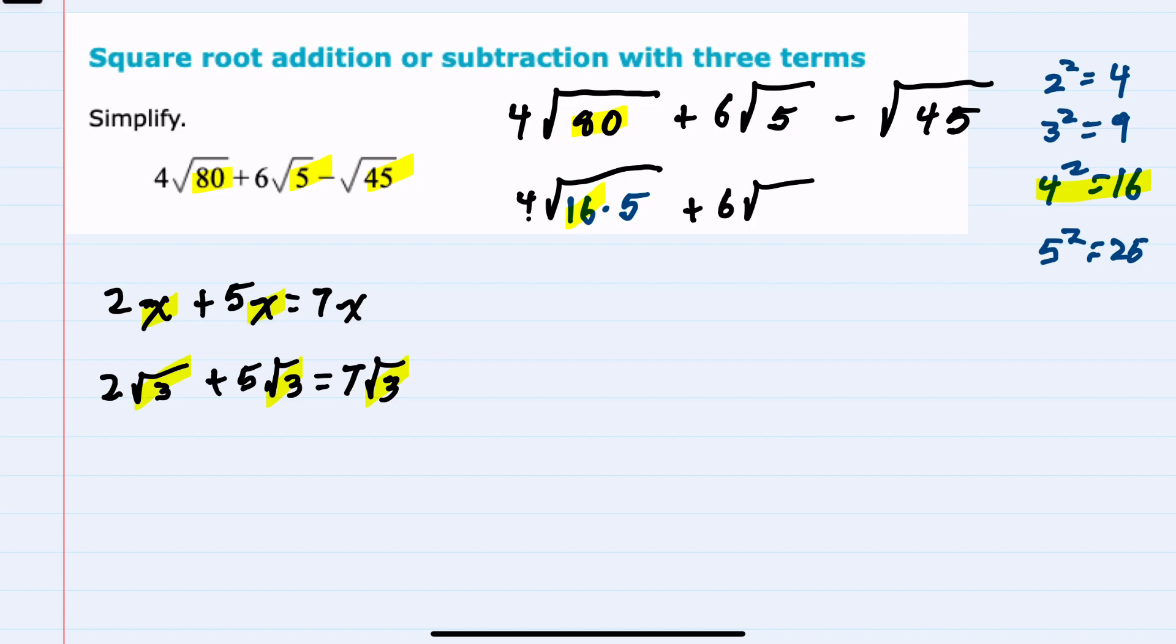For the second term, there's no simplification here. The square root of 5 is just the square root of 5. However, the square root of 45, the 45 can be written as 9 times 5, also allowing me to bring out the 9 because it is a perfect square.